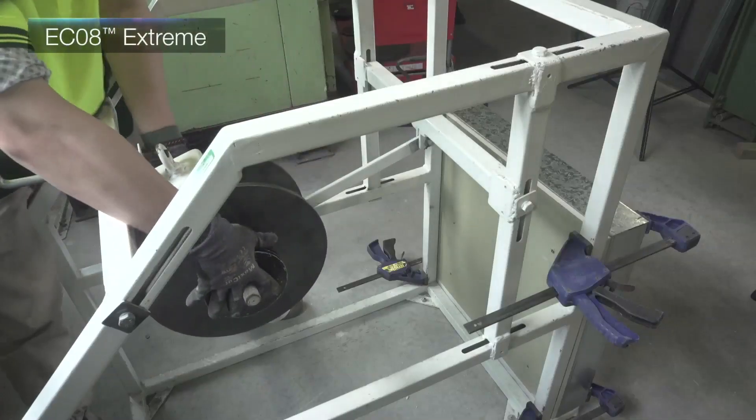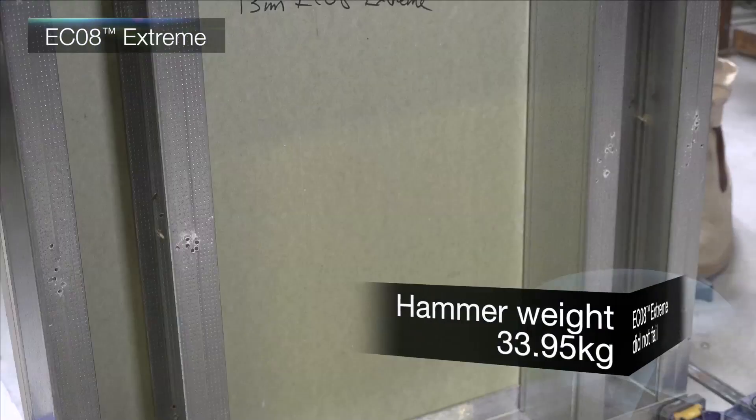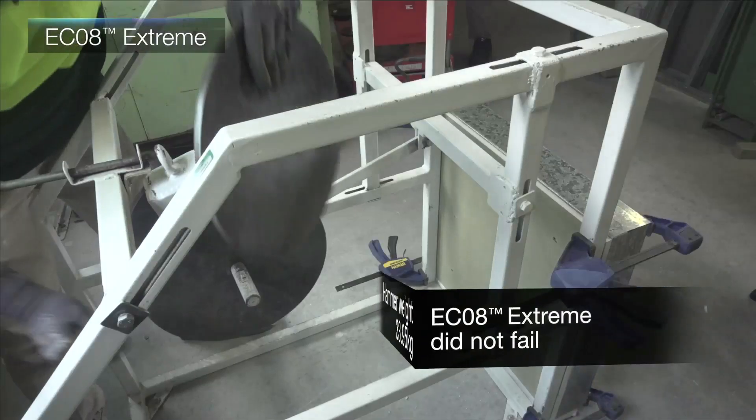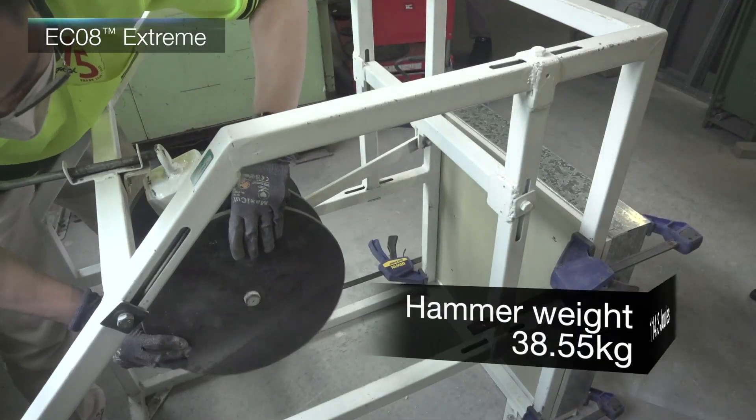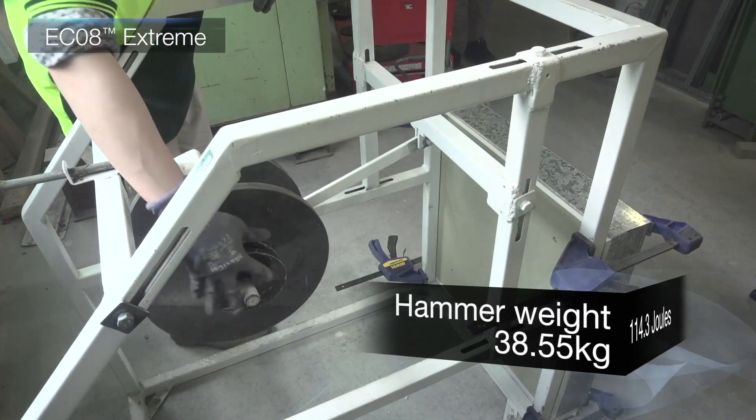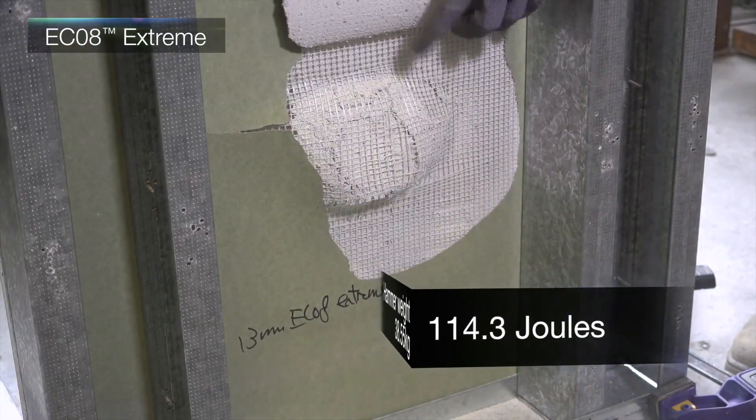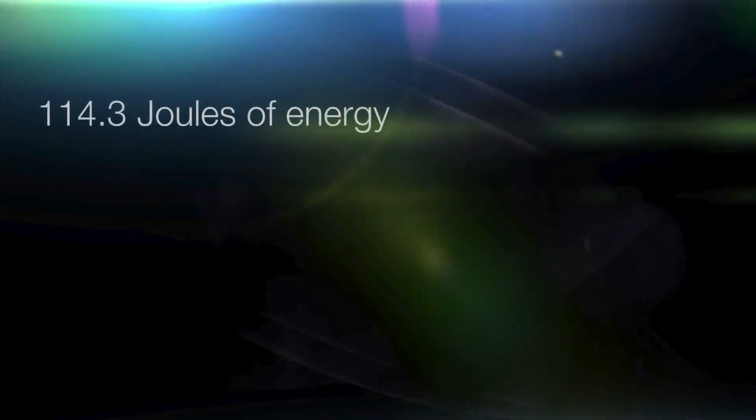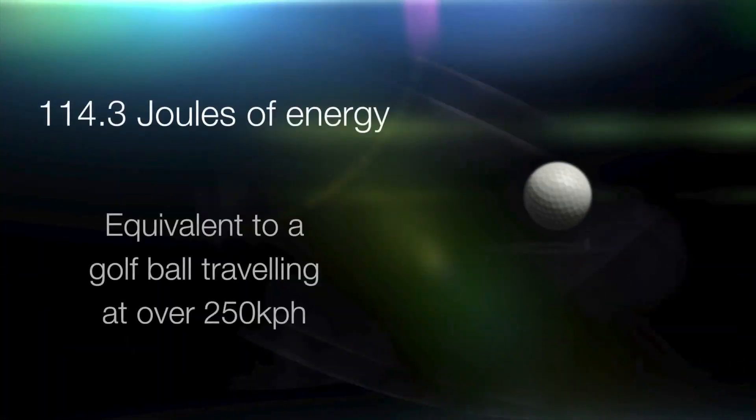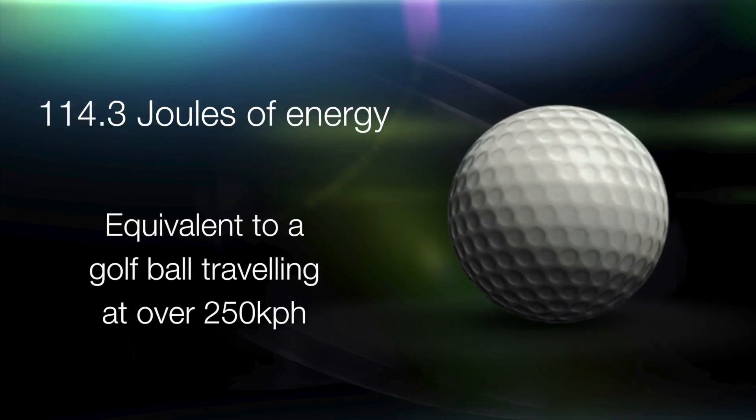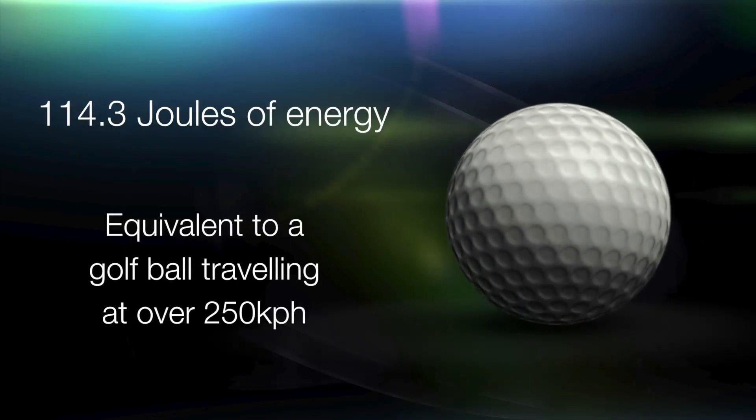Even with the hammer weight increased to 33.95kg, EC08 Extreme did not fail, and it took a massive 38.55kg to reach failure point, with the mesh layer still ostensibly intact. 114.3 joules of energy is equivalent to the impact of a golf ball traveling at over 250 km per hour.